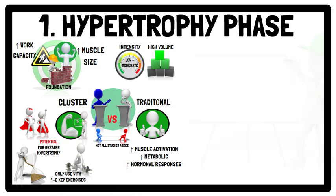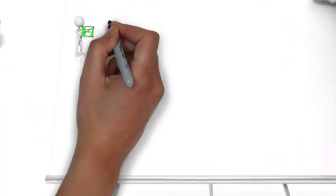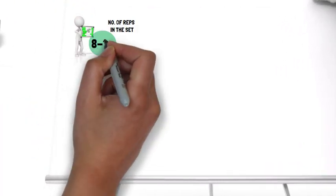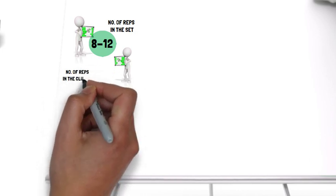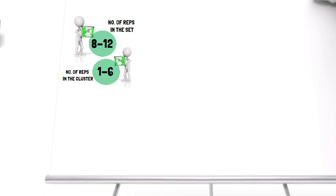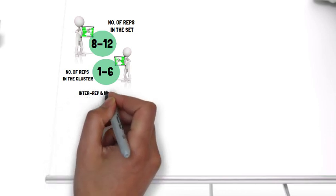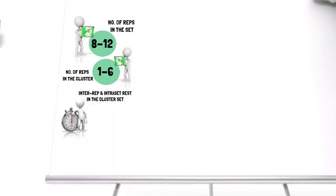When targeting muscle hypertrophy, from a practical standpoint, a moderate to high repetition scheme — for example, 8–12 repetitions — is recommended. If opting to use cluster sets, the number of repetitions performed in the cluster can vary from 1 to 6 repetitions. In terms of the length of intra-repetition and intra-set rest in the cluster set, 5 to 30 seconds is recommended. This recovery time will facilitate the maintenance of performance, allow for the use of higher training loads, and still provide some degree of fatigue to promote hypertrophy. For inter-set rest, 2 to 3 minutes is recommended.